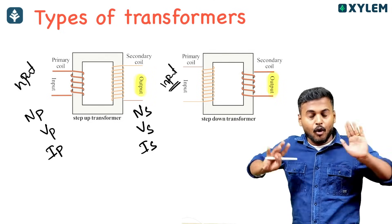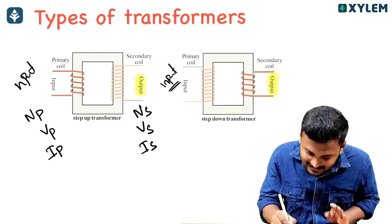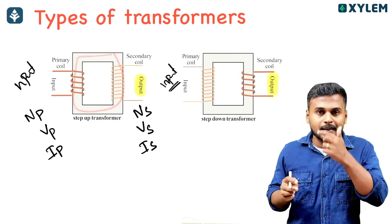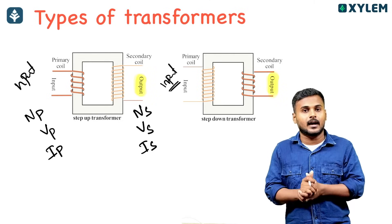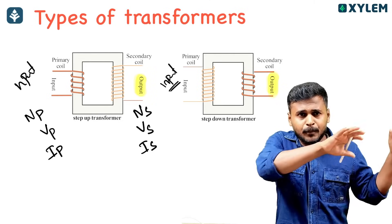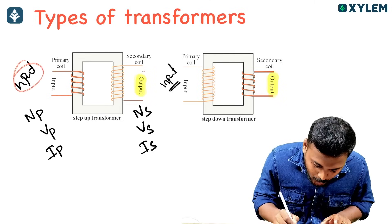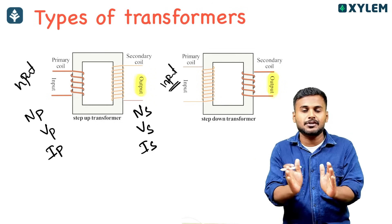P is for primary, S is for secondary. Primary voltage is Vp and secondary voltage is Vs. Primary current is Ip and secondary current is Is. Primary turns is Np and secondary turns is Ns. This is the construction of the transformer.